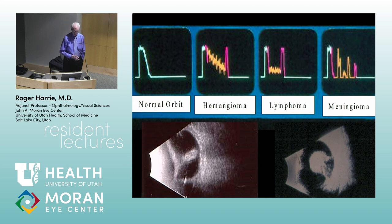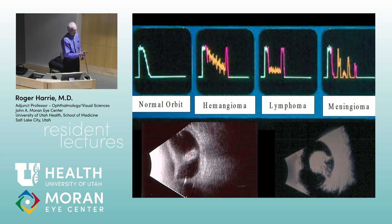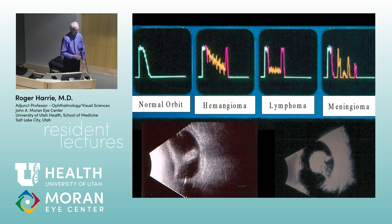Even in the orbit, there's still a role for ultrasound. The A-scan lines actually mean something — there's a correlation to pathology. When I was doing my residency, I was impressed that you could look at cell structure and architecture and correlate it to these lines. A normal orbit looks one way, then hemangioma, lymphoma, angiomas — you almost get tissue signatures based on pathology. Inside the globe, things like detached retinas or melanomas still have a lot of usefulness.